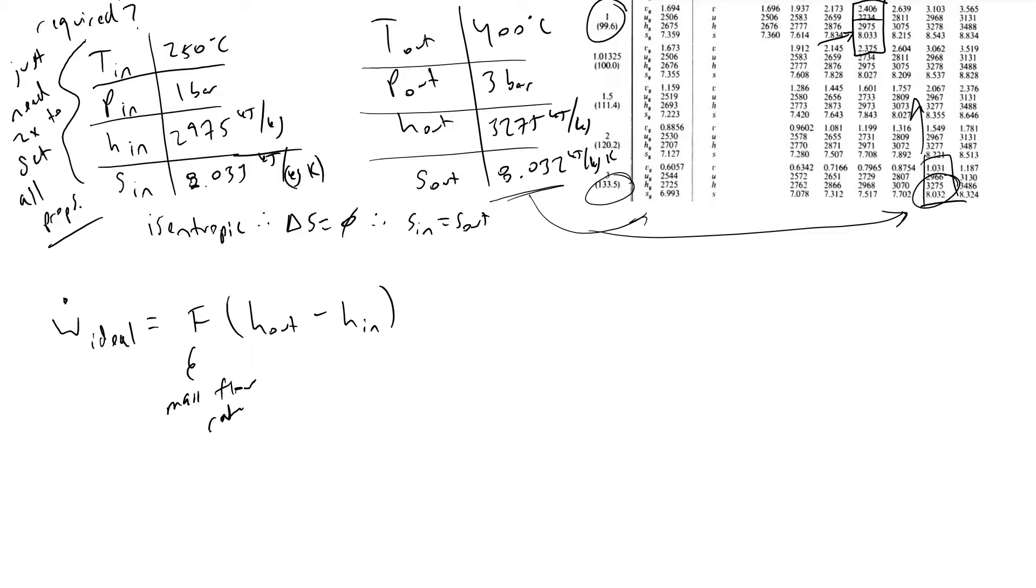In this case, what we find is we've got 10 kilograms per second, and we're multiplying this quantity by 3275 minus 2975 kilojoules per kilogram. What you'll note is that this is equivalent to 3000 kilojoules per second, which is equal to 3000 kilowatts.